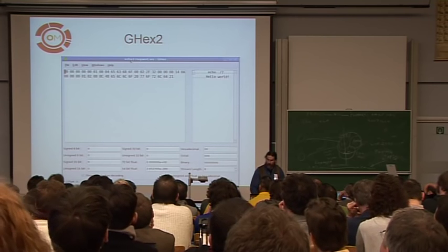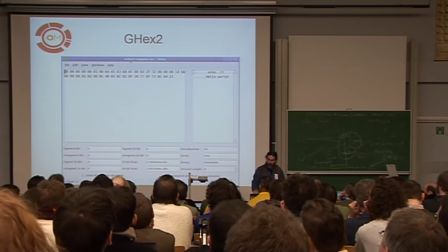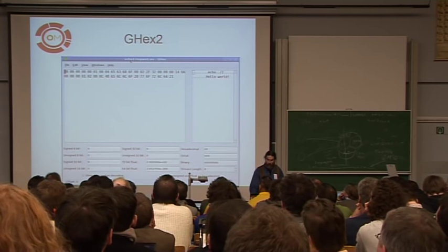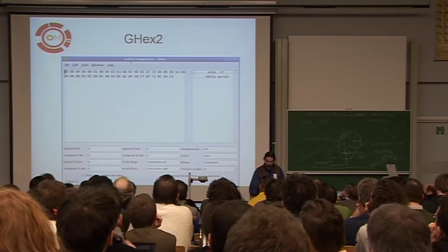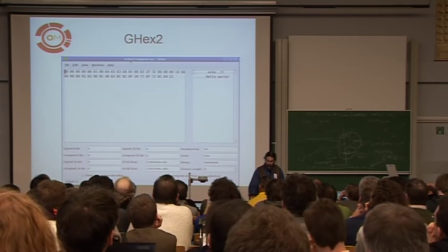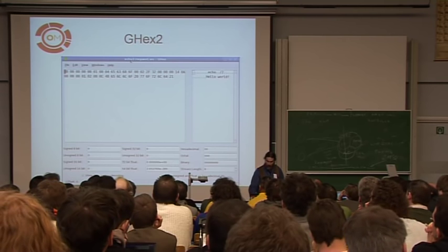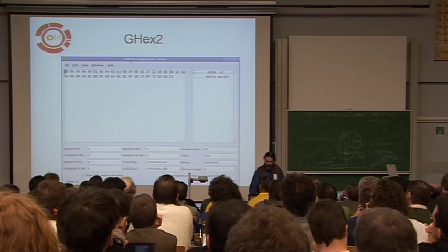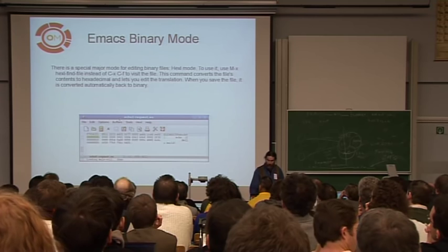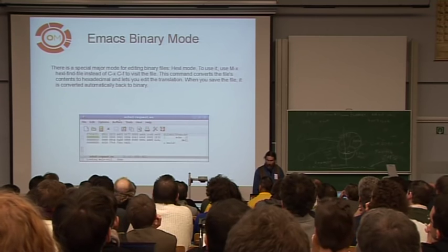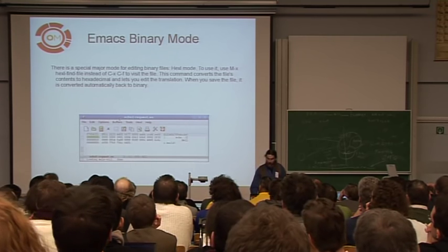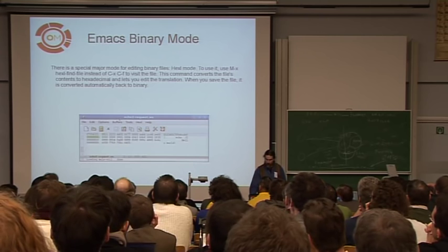I tried to use the same packet here — this is actually an encoded object, basically. It says 'hello world,' and it's a string. GHex is kind of nice because you can get all your offsets and do a little bit to switch the encoding. Emacs binary mode actually works pretty well — I use this pretty often, actually.